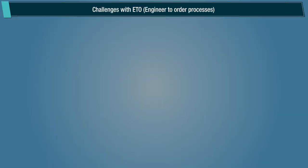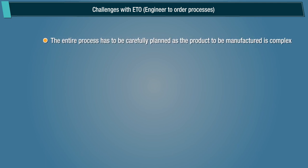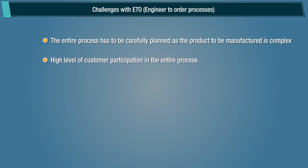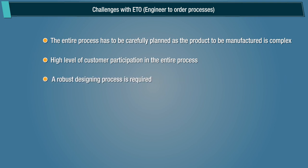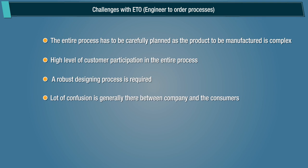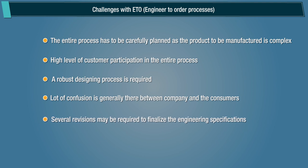Challenges with ETO engineer-to-order processes: The entire process has to be carefully planned, as the product to be manufactured is complex. There is a high level of customer participation in the entire process. A robust designing process is required. A lot of confusion is generally there between the company and the consumers. Several revisions may be required to finalize the engineering specifications. Costs of the entire process are very difficult to predict.